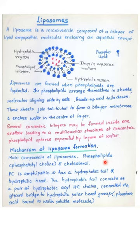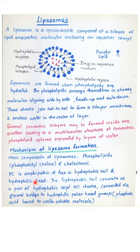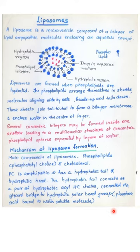The major components of the liposomes are phospholipids, which are also present in the cell membrane, and therefore this helps the liposomes to avoid detection and subsequent destruction. The phospholipid commonly present in liposomes is phosphatidylcholine as well as cholesterol. Phosphatidylcholine is an amphipathic molecule which has a hydrophobic tail and a hydrophilic head. The hydrophobic tail consists of a pair of hydrophobic acyl hydrocarbon chains connected via a glycerol bridge to a hydrophilic polar head group.